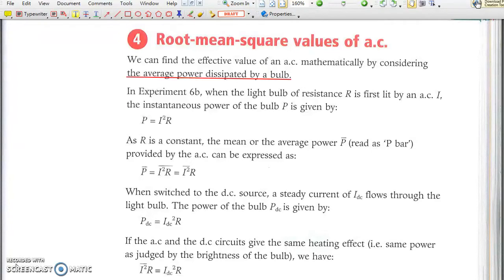The instantaneous power is P = I²R, which is the power when a certain current is flowing through a resistor R. As this instantaneous power is changing with time, we need to find its average value in order to compare with the constant power produced by steady DC, given by the equation below.